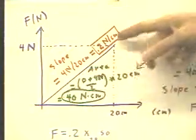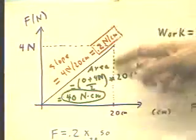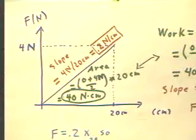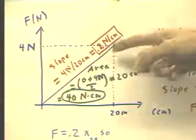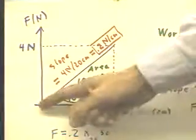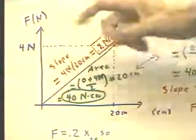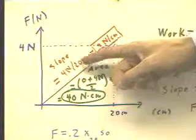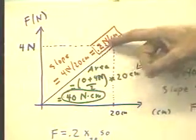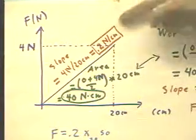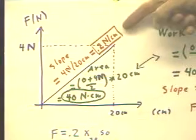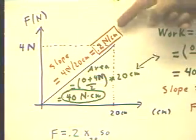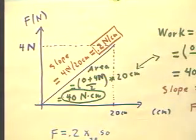Two things we can calculate when we've got a graph: we can calculate the slope and the area under the curve. It should be a natural impulse. The slope is very easy to calculate. If we've got the origin and the point at (20, 4), then the slope is going to be the rise, 4 newtons, divided by the run, 20 centimeters, which is 0.2 newtons per centimeter. This tells us how many newtons of force is associated with a one centimeter increase in the stretch of the rubber band.